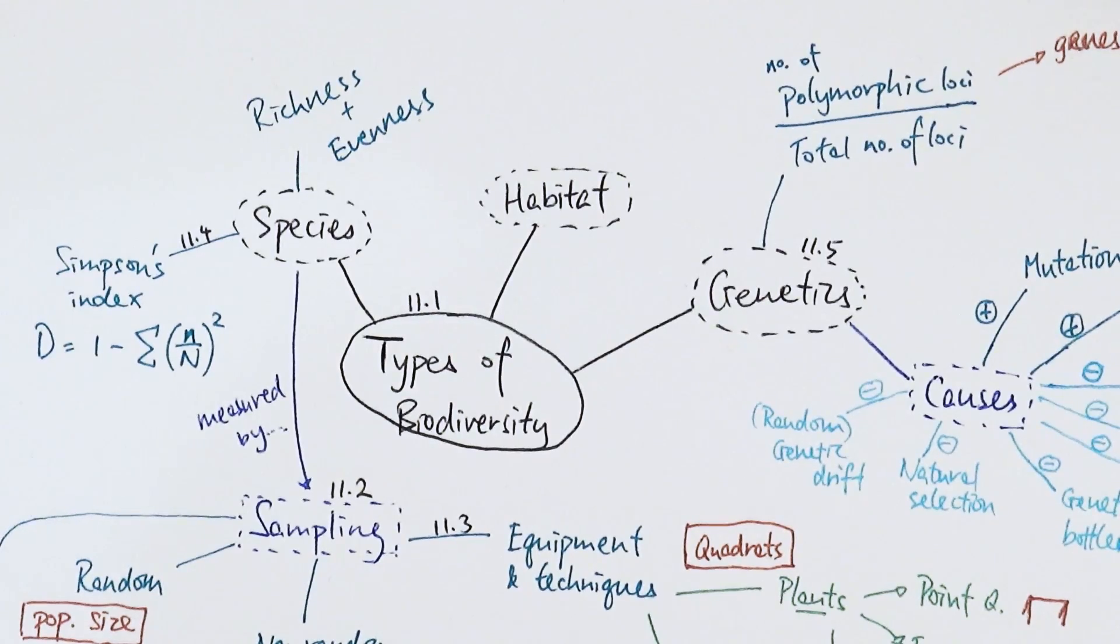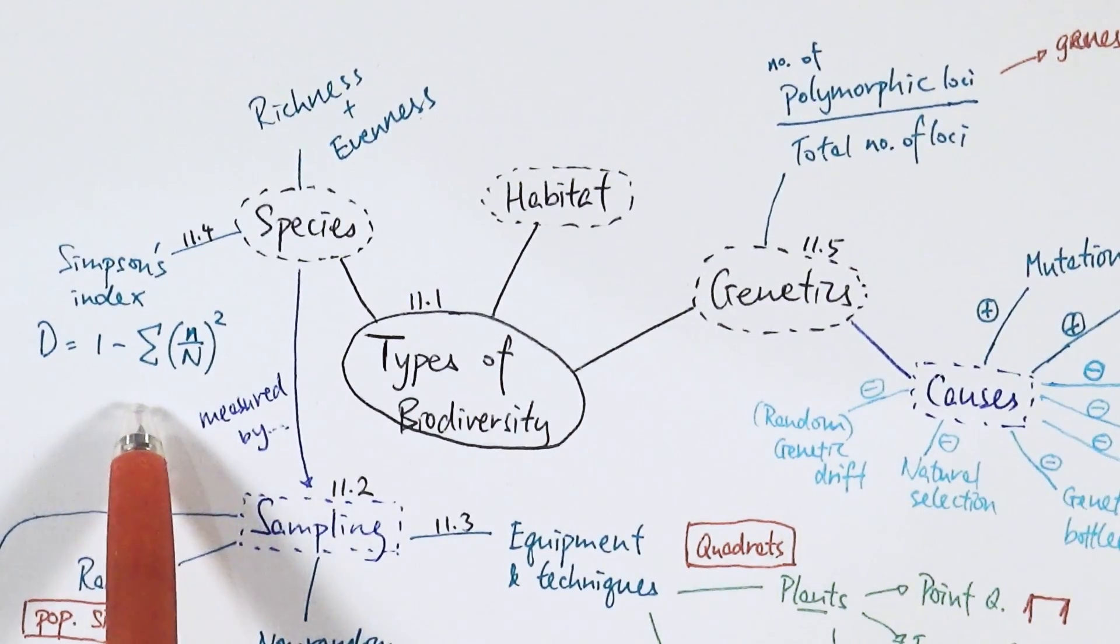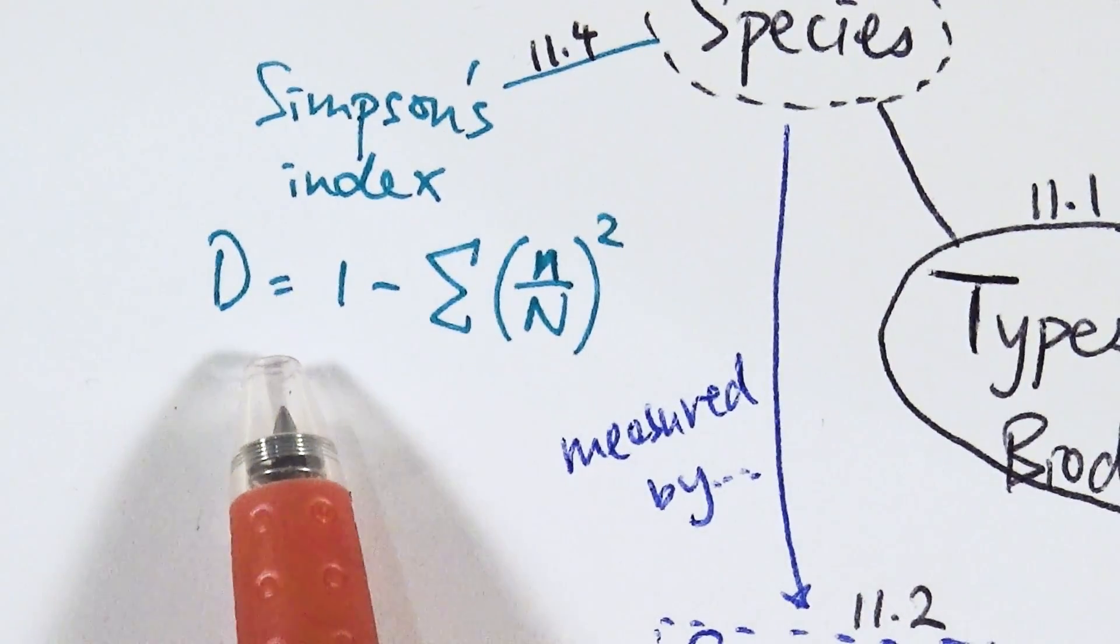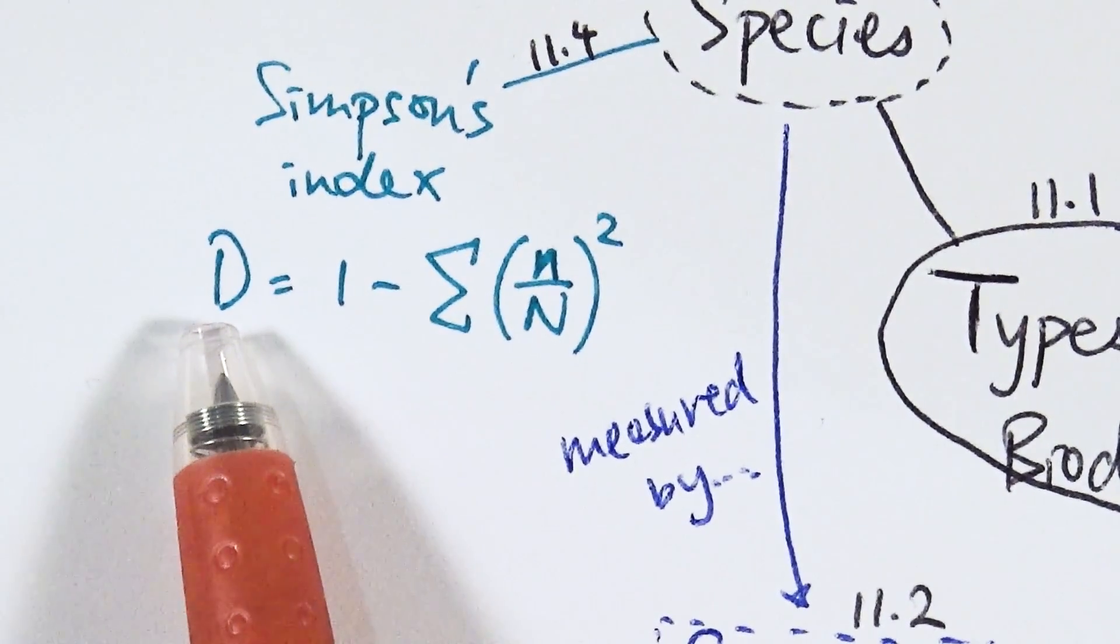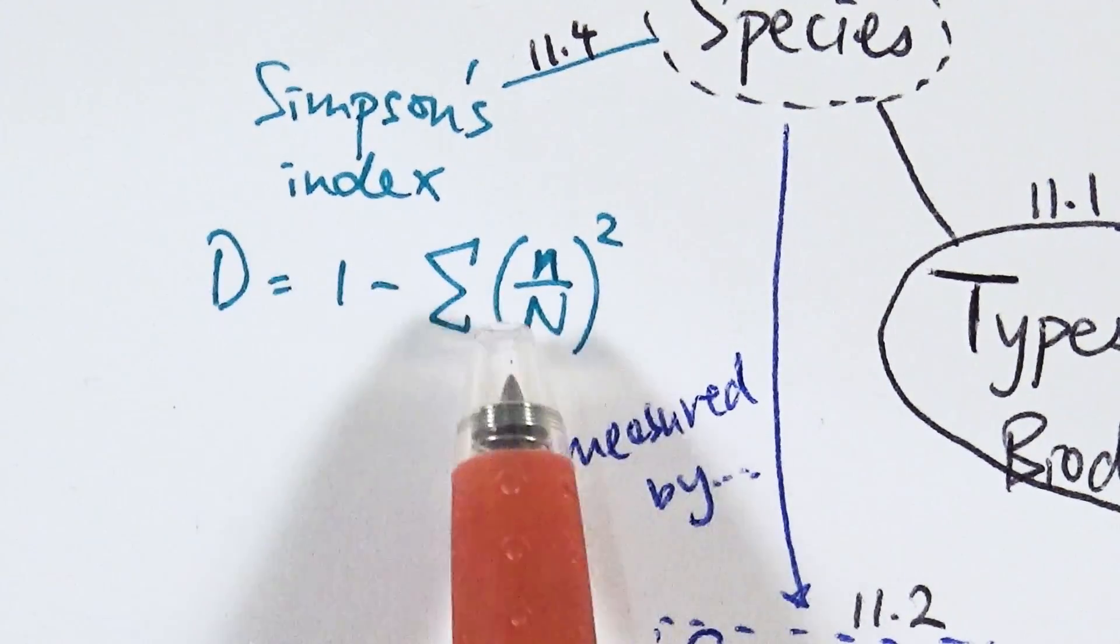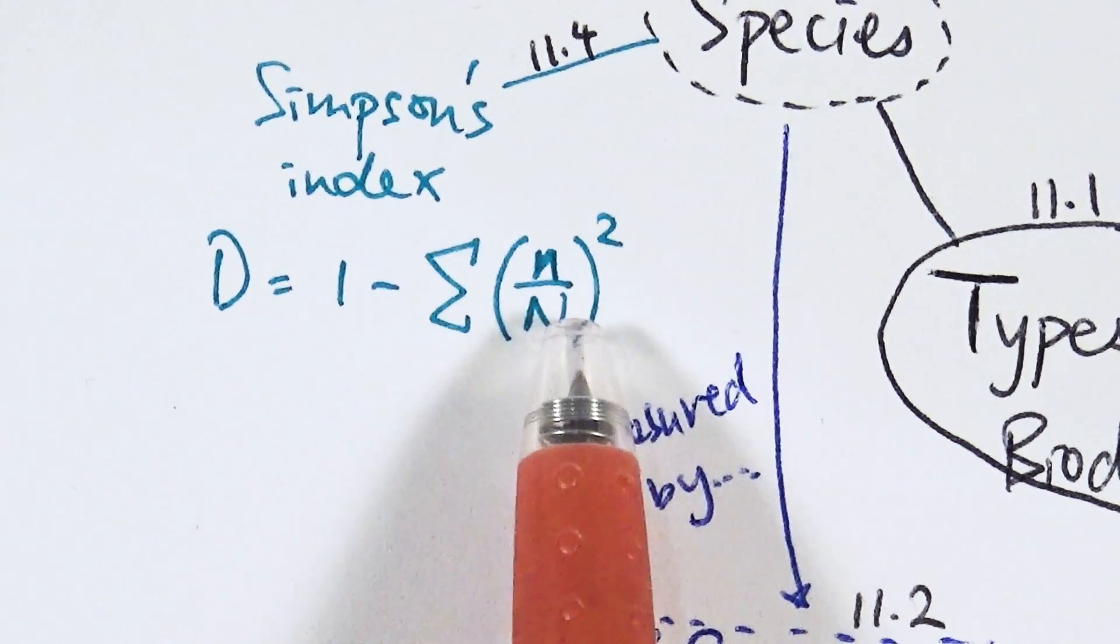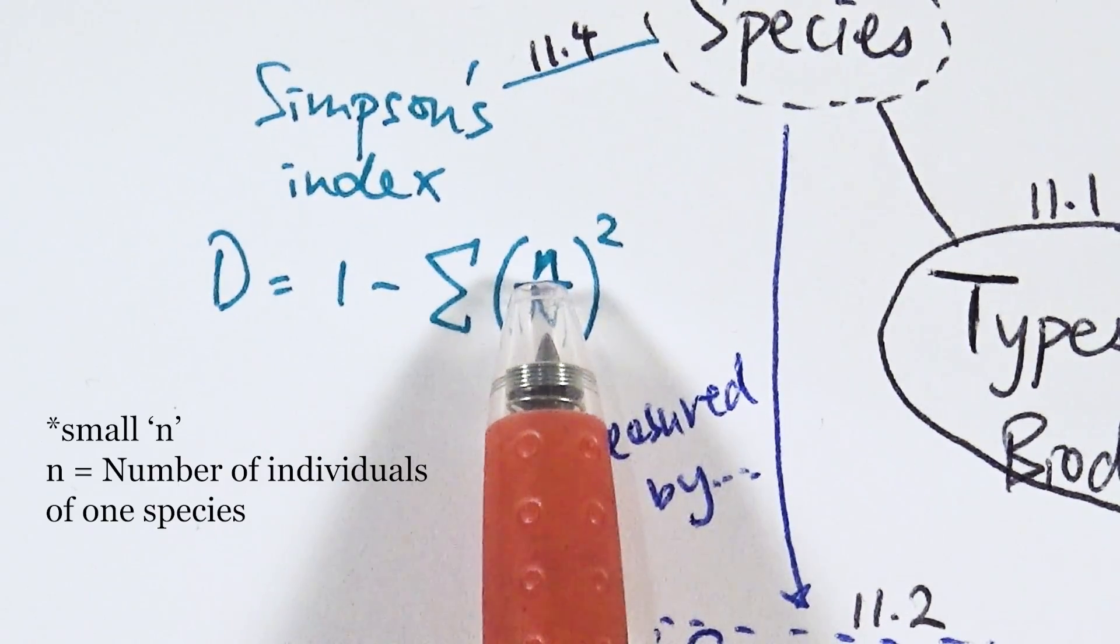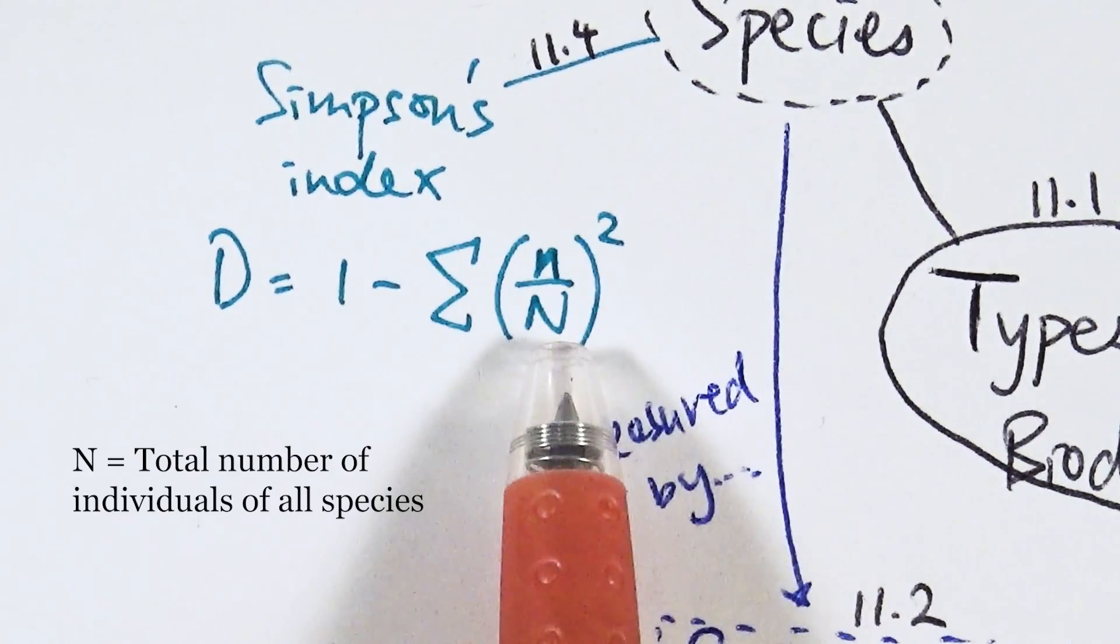Simpson's index can be used to measure species biodiversity. This is one equation you have to memorize for the exam, particularly what the letters mean. D stands for the Simpson's index value. The Σ symbol stands for the sum. Lowercase n is the total number of individuals in one particular species, and capital N is the total number of individuals in all species.